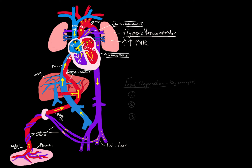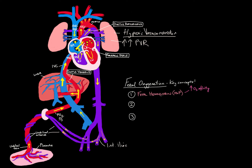Next, let's talk about fetal oxygenation and some key concepts. You might wonder: how is the fetus able to sustain itself with a PO2 of only 55, when that wouldn't be sufficient to oxygenate an adult? The first reason is that fetal hemoglobin is different from adult hemoglobin — it has a much higher affinity for oxygen, allowing it to take up oxygen from the placenta at a much greater rate at any given PO2 than adult hemoglobin would.